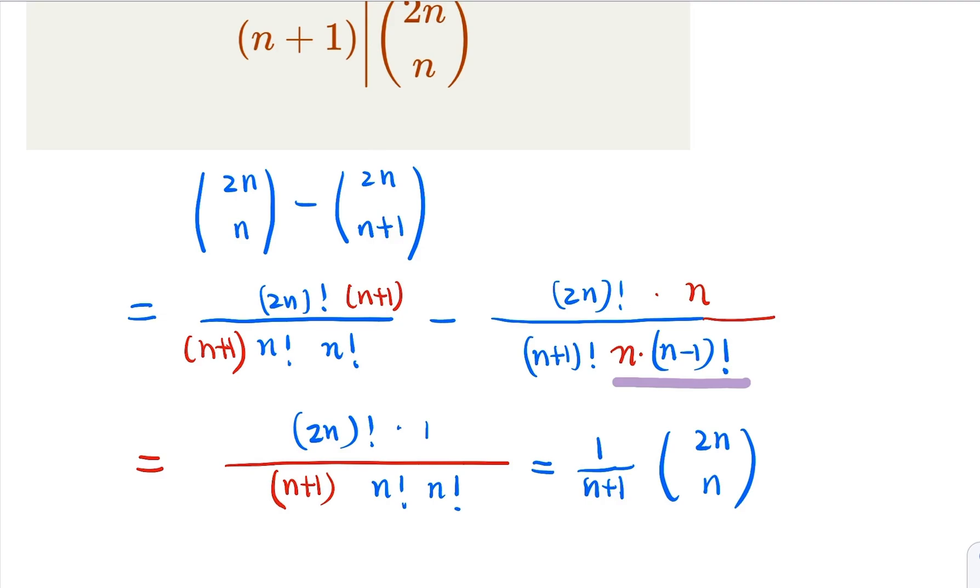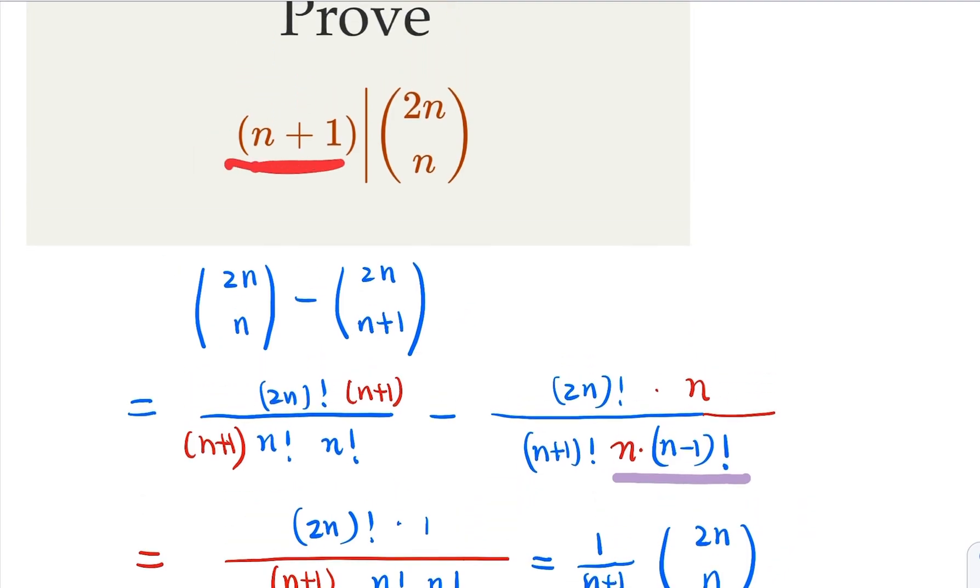So we have shown that an integer on the left hand side, the right hand side has to be an integer, which means n plus 1 is going to divide 2n choose n.